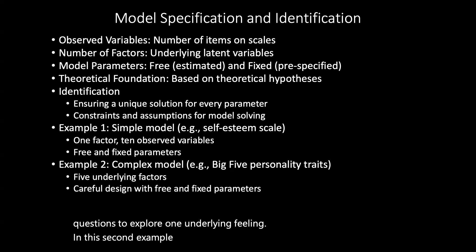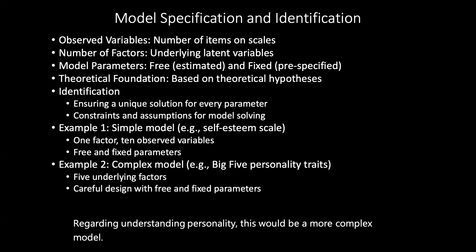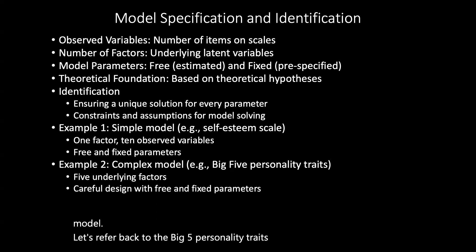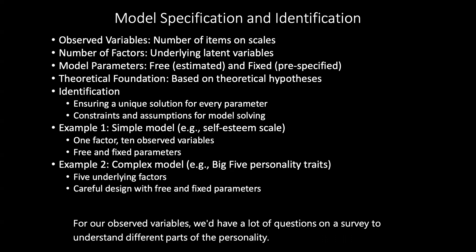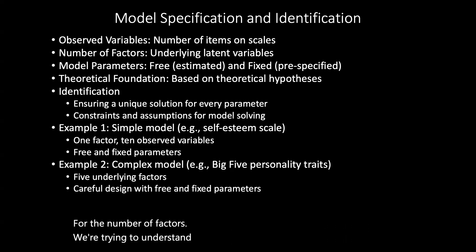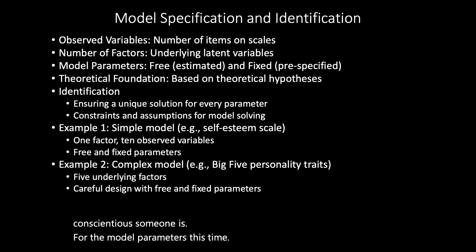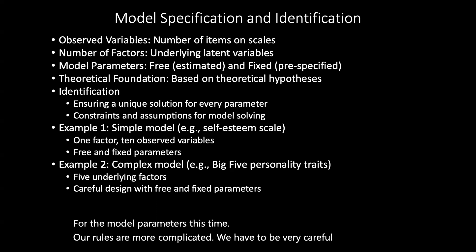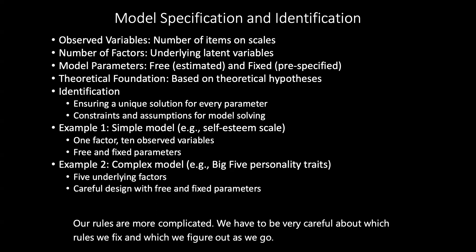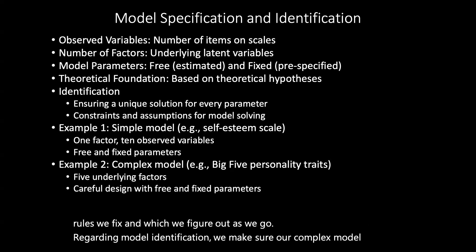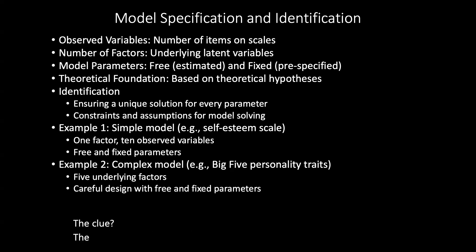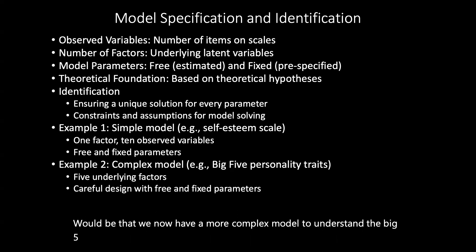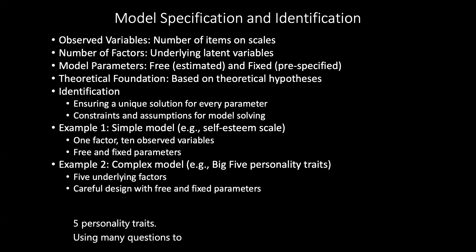In this second example, regarding understanding personality, this would be a more complex model. Let's refer back to the Big Five personality traits. For our observed variables, we'd have a lot of questions on a survey to understand different parts of personality. For the number of factors, we're trying to understand five hidden ideas, like how extroverted or conscientious someone is. For the model parameters, our rules are more complicated — we have to be very careful about which rules we fix and which we figure out as we go. Regarding model identification, we make sure our complex model can still be solved without contradictions. We now have a more complex model to understand the Big Five personality traits using many questions to explore five underlying ideas.